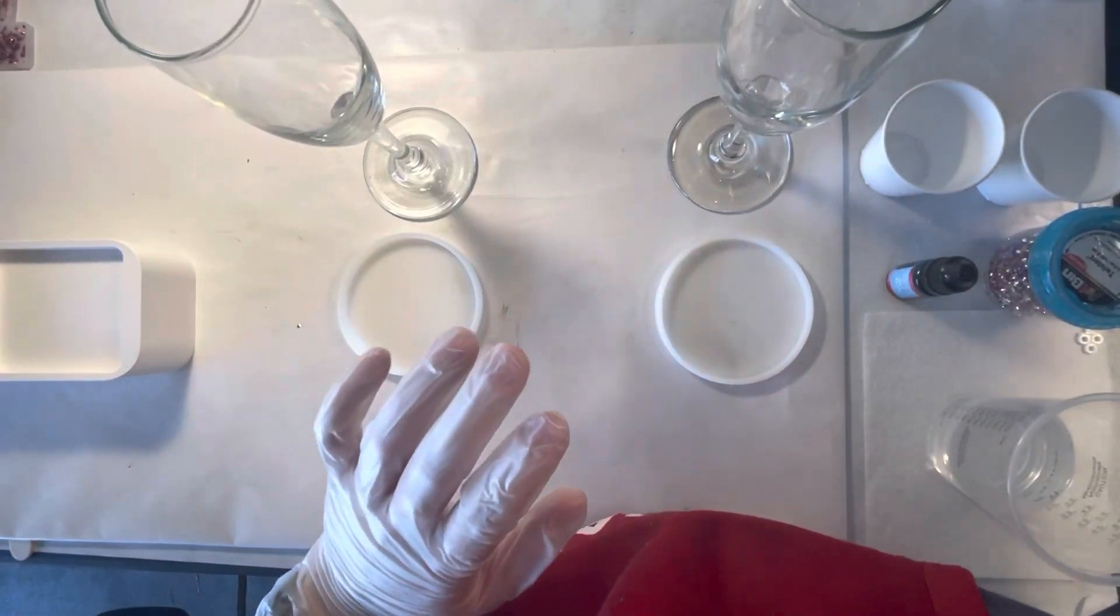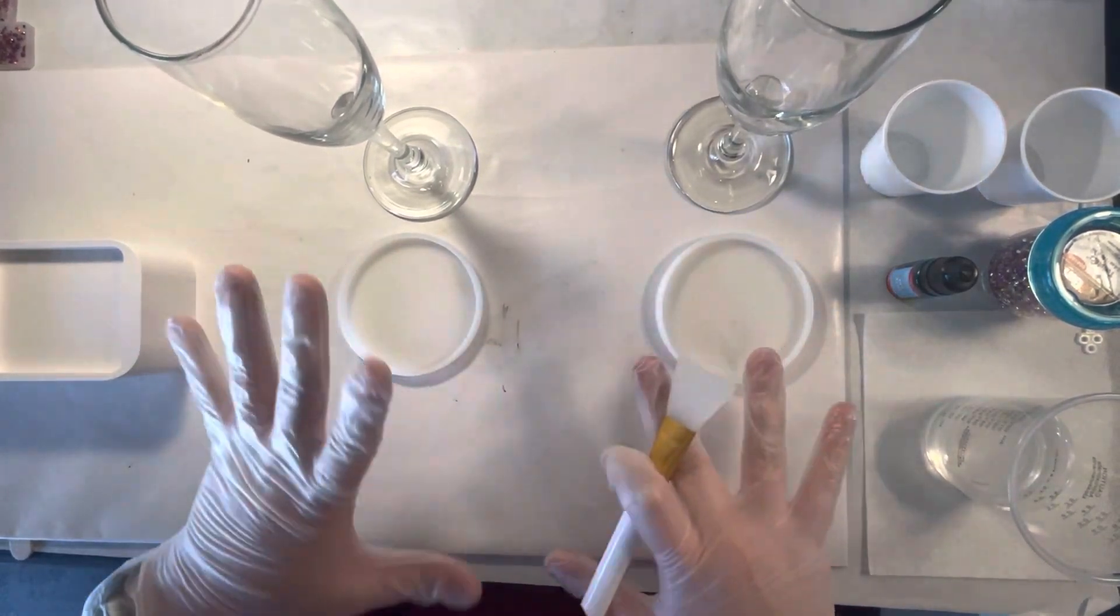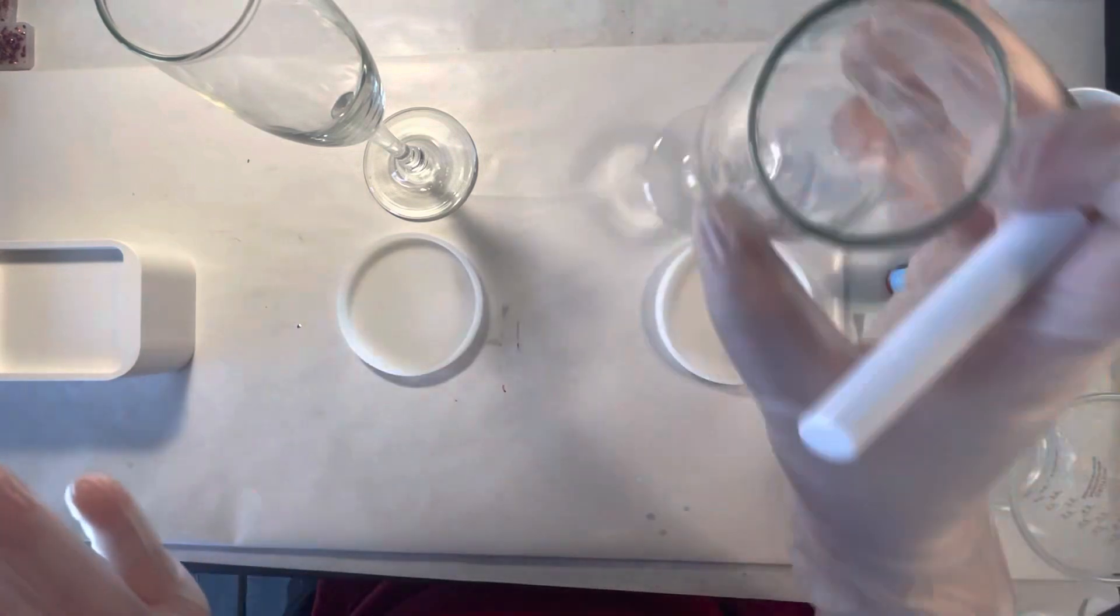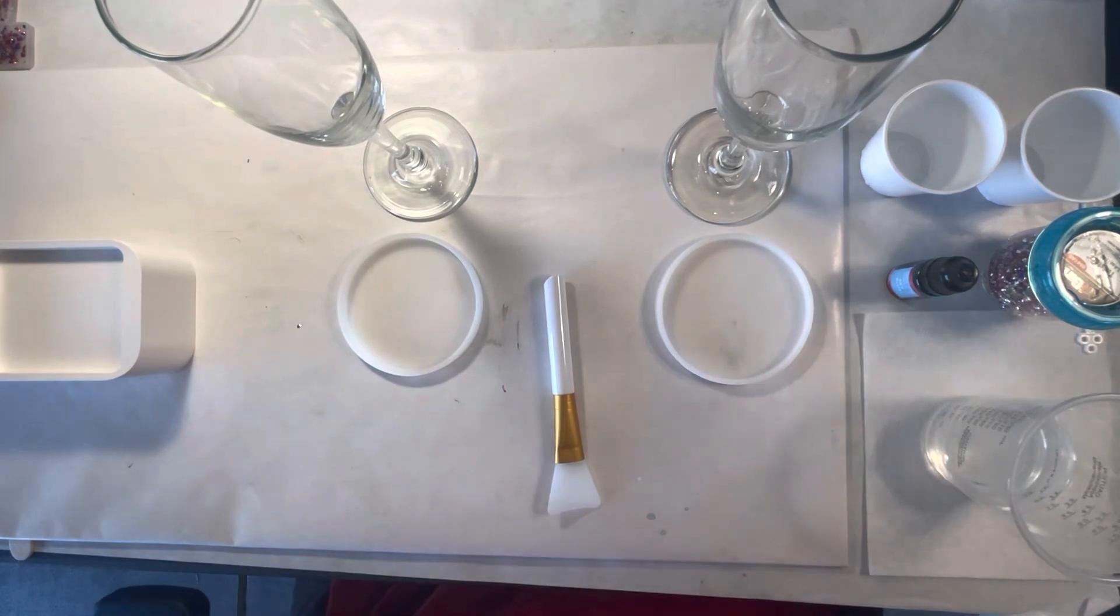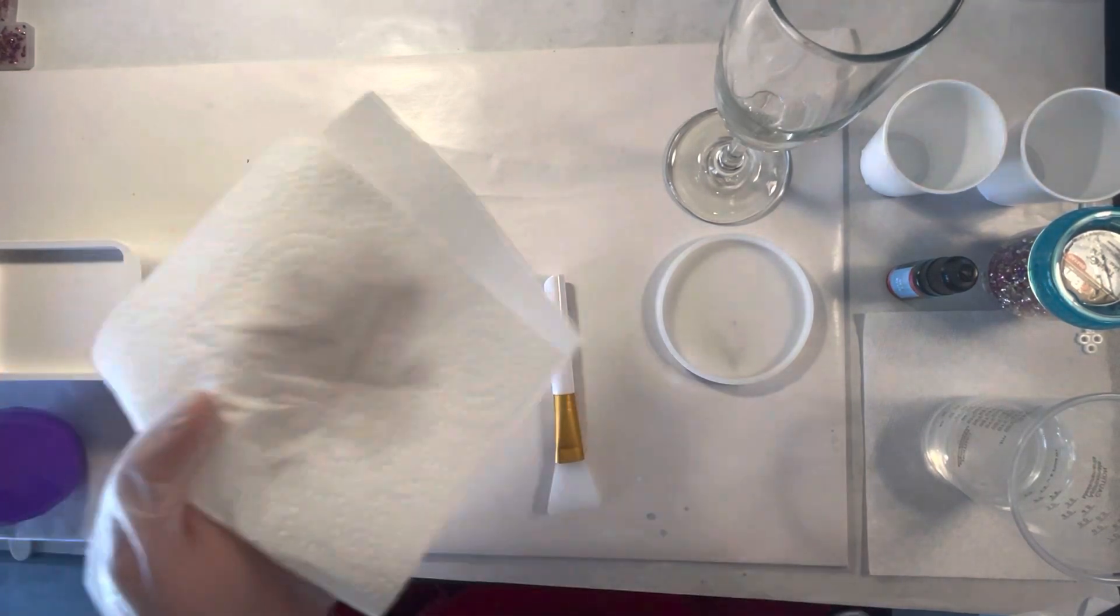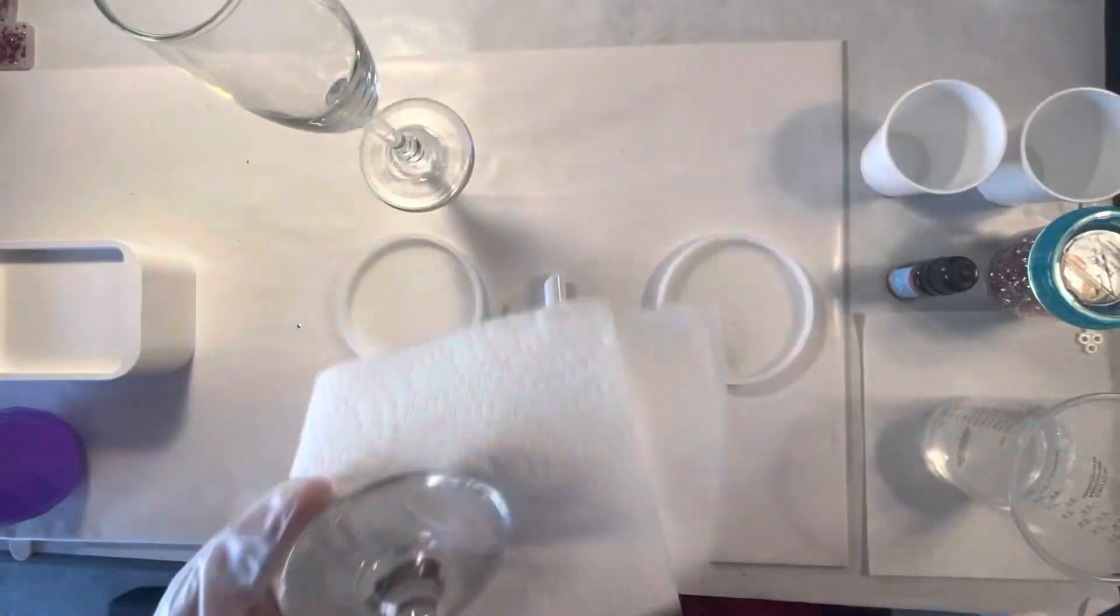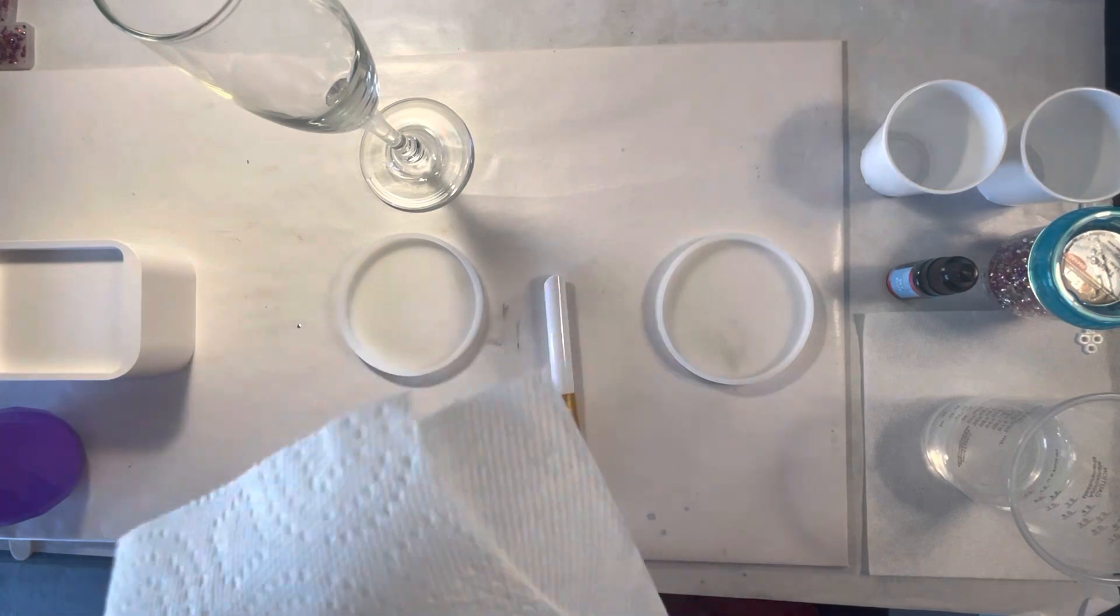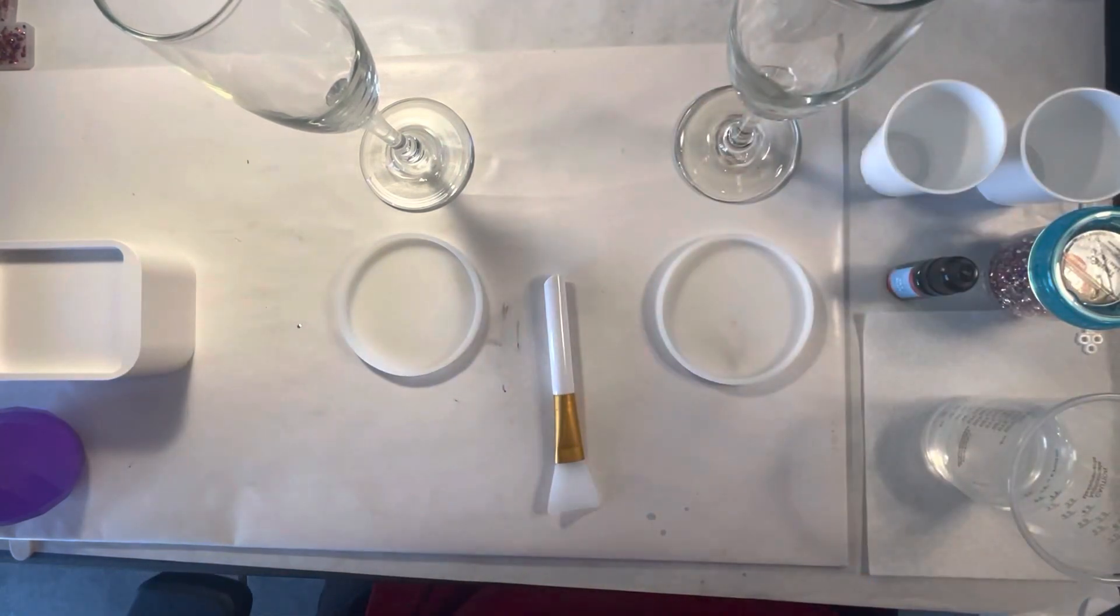Alright guys, so I've got my resin mixed up. Each of these holds 40 milliliters so I did just under 80 because the bottom of the glass is actually going to take up some of the room with the coaster, probably quite a bit actually. And actually I think before I do too much, because these have been sitting in storage they're probably just a little dusty, so I just sprayed my paper towel with some alcohol and I'm just wiping them down just in case.